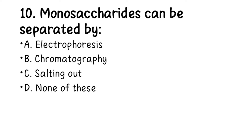Number 10. Monosaccharides can be separated by: A. Electrophoresis, B. Chromatography, C. Salting out, D. None of these. The right answer here is chromatography. Monosaccharides bonded into short or long chains can be separated into individual monomeric units using a chromatographic method of separation.